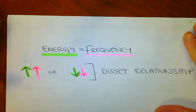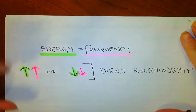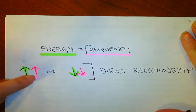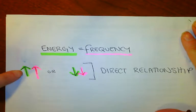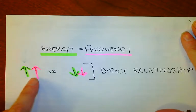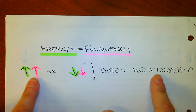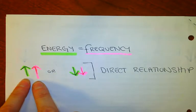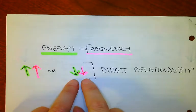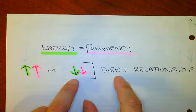For waves, as a property of waves, energy is dependent on frequency. So that means if you have a higher frequency, like gamma rays, it has higher energy. It's more dangerous. And that's what we call a direct relationship, because they go in the same direction. Energy and frequency go up together, or they go down together.